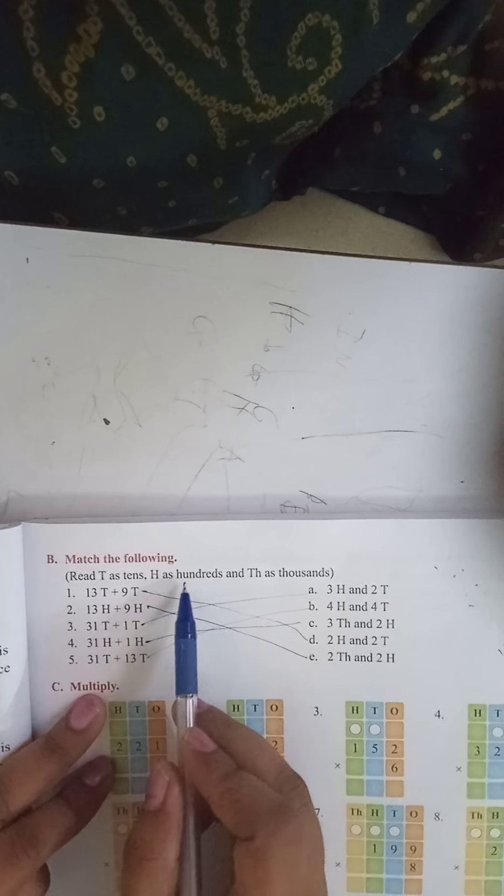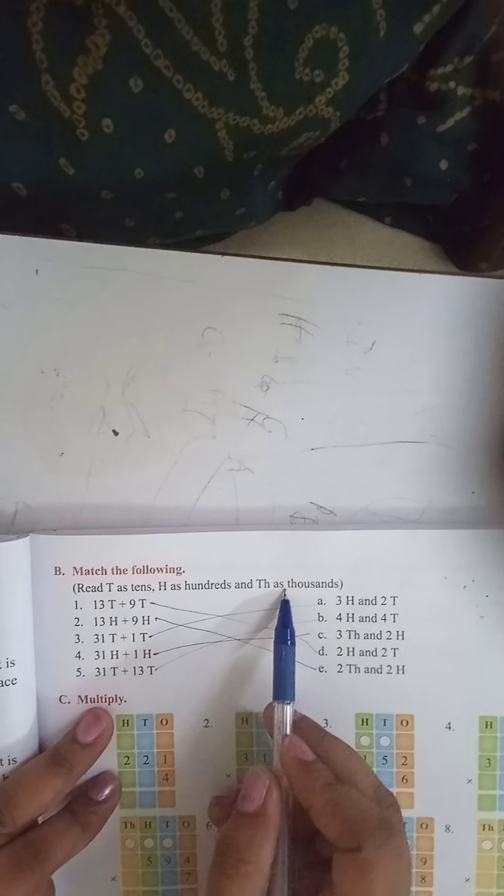Now see the match the following. Read T as tens. T means tens, H means 100, and TH means 1000.